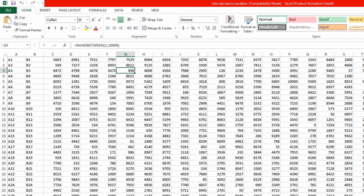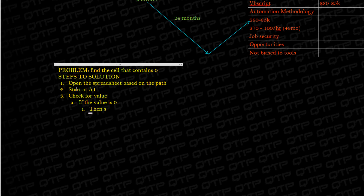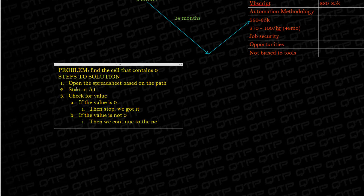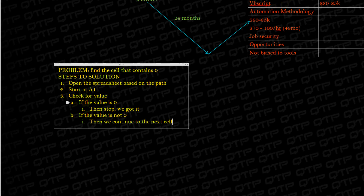So let's convert that into pseudocode. I start at A1, check for value. If the value is zero, then stop — we got it. If the value is not zero, then we continue to the next cell. Does this seem reasonable and logical? We start here — if the value is zero, we stop, we won, we found our cell. If the value is not zero, we move on to the next one. Is it zero? No. Let's move on. No, no, no, and so on and so forth until we find it. It may not even exist here. So: check for value — if the value is zero, then stop; if the value is not zero, then continue to the next cell.